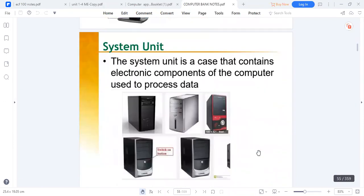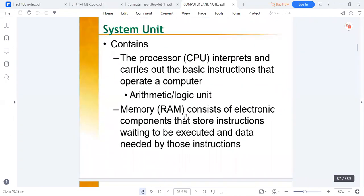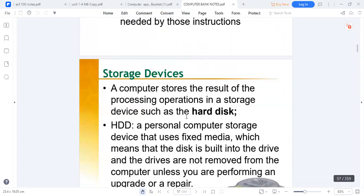The central processing unit collectively is called the system unit, which contains electronic components. As has been explained, the ALU, which is the calculator, the memory unit, and the CPU. The CPU interprets basic instructions and operates with the arithmetic logic unit and the memory unit, which consists of the RAM and the ROM.